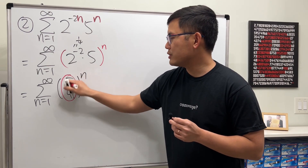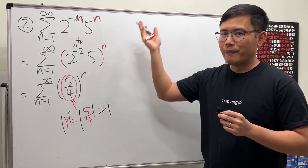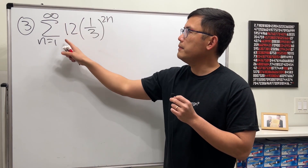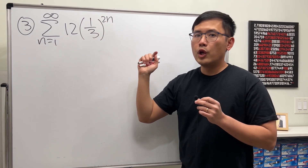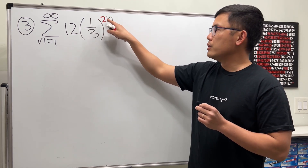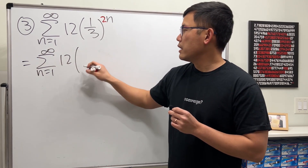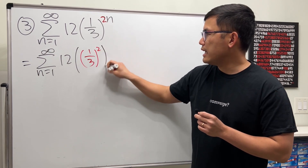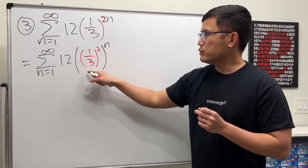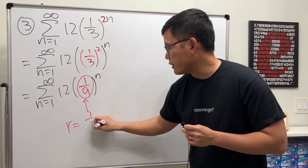As you can see, the common ratio is five over four, and its absolute value is bigger than one, therefore this geometric series diverges. For number three, we have the series as n goes from one to infinity of twelve times one over three raised to the two n power. We need the coefficient of n to be one — here we have two — so we fix it by squaring one third first, then raising that to the nth power. One over three squared is one over nine, so one over nine is our common ratio.